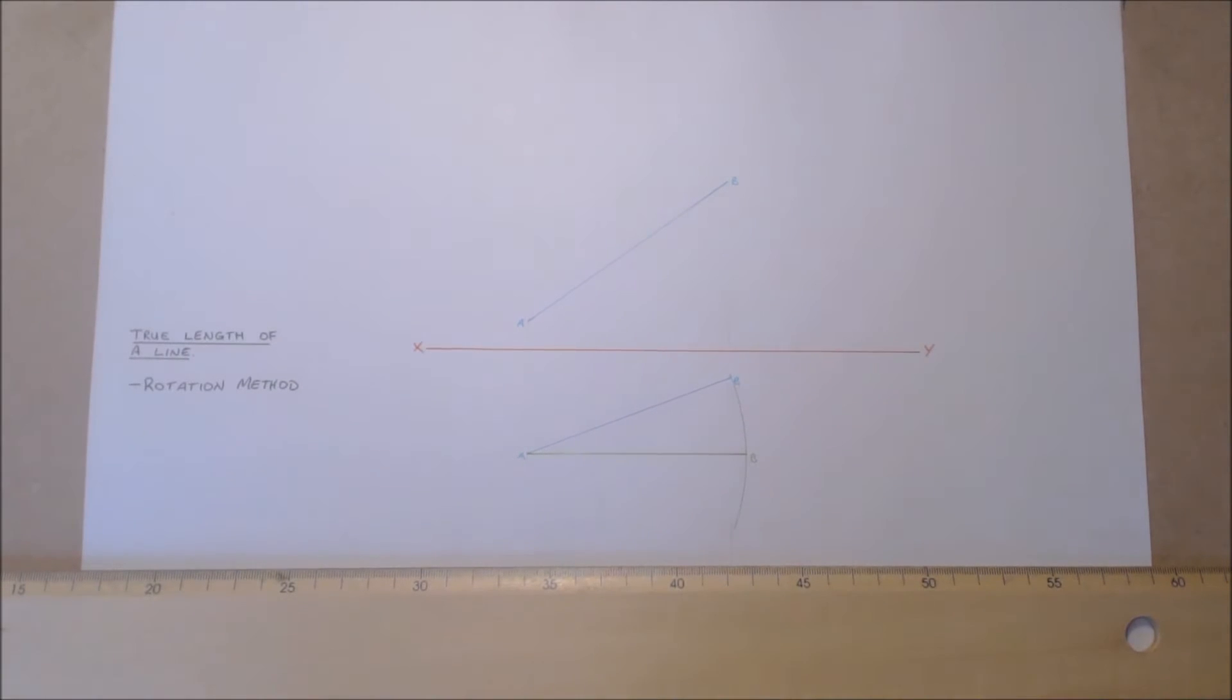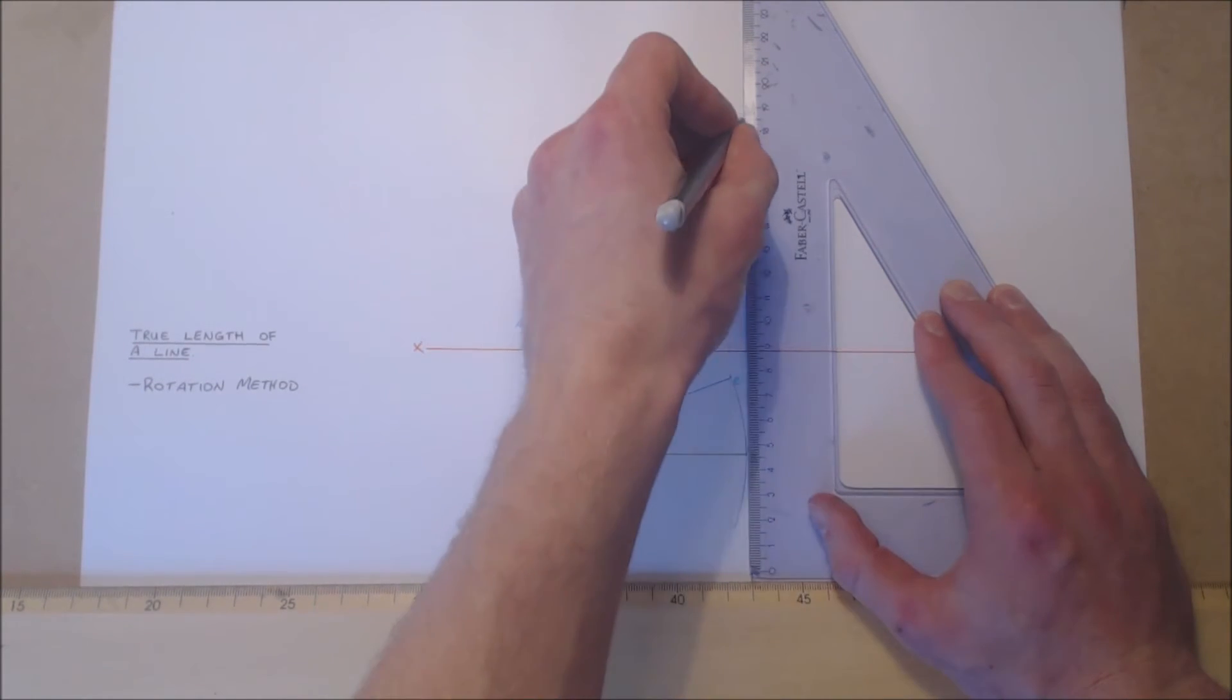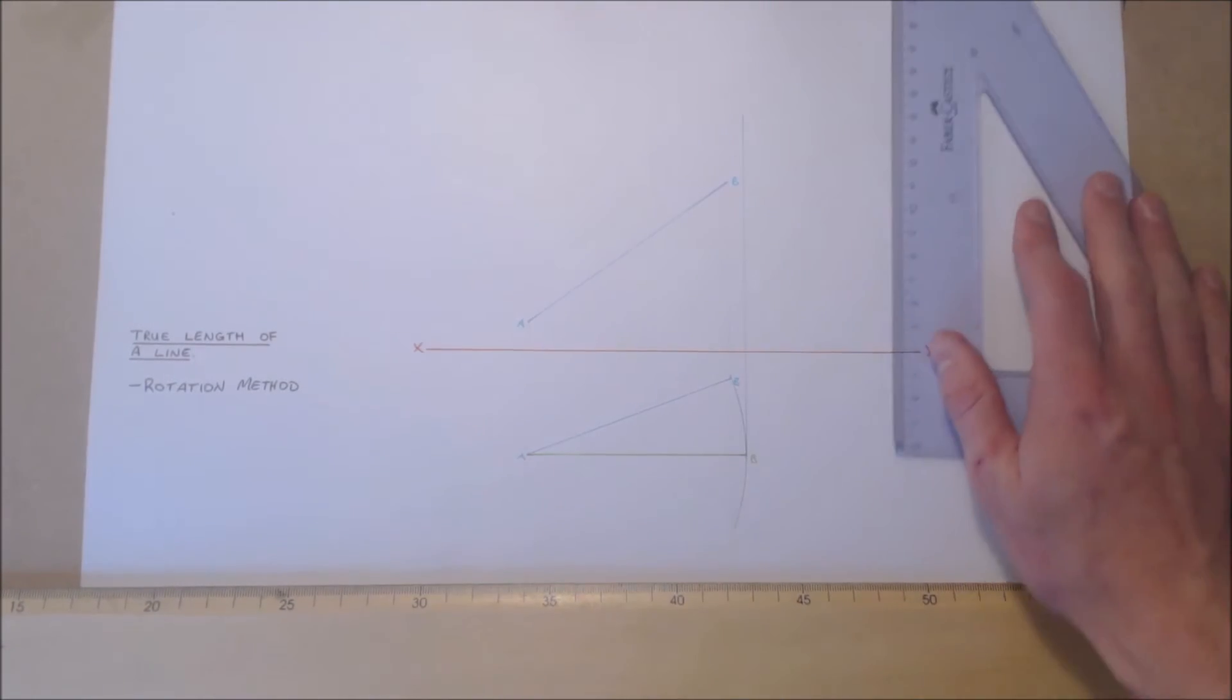Find the true length of the line in elevation. Project the rotated point perpendicular to the projection plane into the elevation. The point will remain the same height.